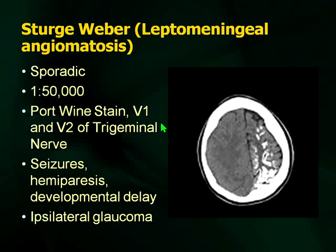Moving on from NF1 to Sturge-Weber. This is the trick question that comes on almost every examination: what is the mode of inheritance of Sturge-Weber? Your inclination is to say autosomal dominant, but this is the one that's sporadic. The incidence is much lower than NF1 or tuberous sclerosis — 1 in 50,000 — but examiners like to put lots of questions about it because it's so distinctive. Remember there's a port wine stain, and the distribution is V1 and V2 of the trigeminal nerve.